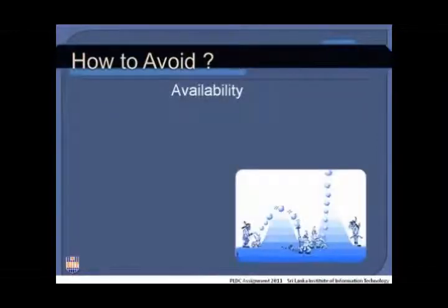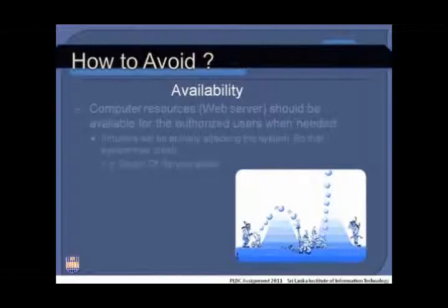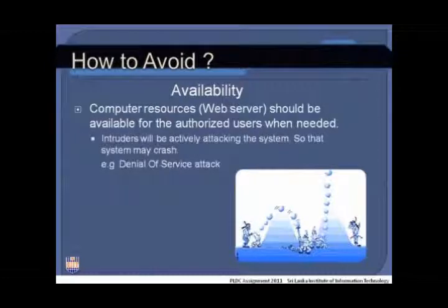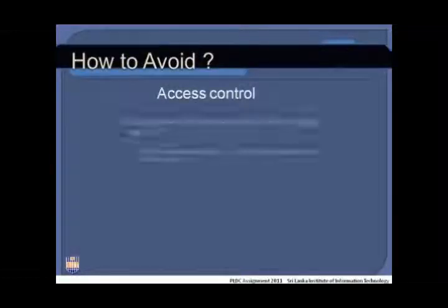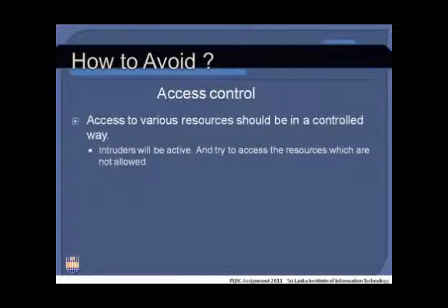Availability assures that computer resources are available to users when needed. Access control ensures that access to various resources is managed in a controlled manner, and this feature is achieved through access control mechanisms.